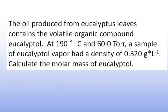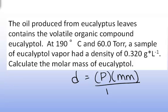We can use the recently derived mass density equation for an ideal gas. The density of an ideal gas is equal to the pressure times the molar mass divided by the gas constant times the absolute temperature: d = (P)(mm)/(RT).